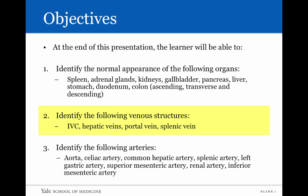You'll also be able to identify the following venous structures: the inferior vena cava or IVC, hepatic veins, portal vein, and splenic vein. And finally, you'll be able to identify the following arteries: the aorta, the celiac artery, common hepatic artery, splenic artery, left gastric artery, the superior mesenteric artery, the renal artery, and the inferior mesenteric artery.